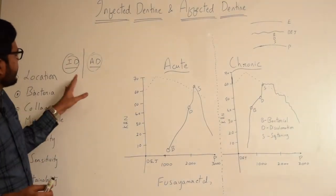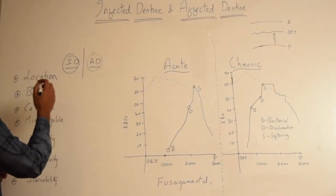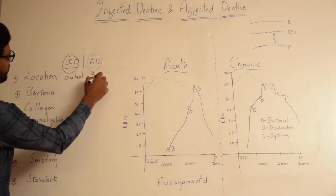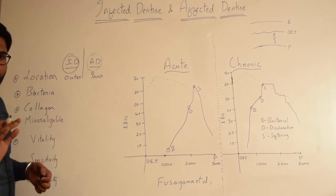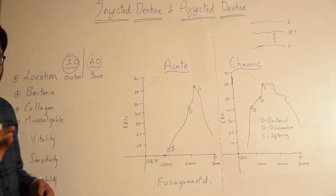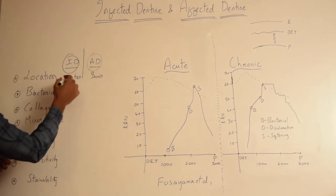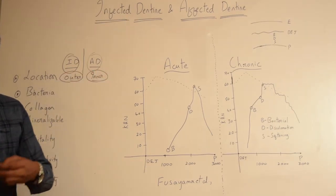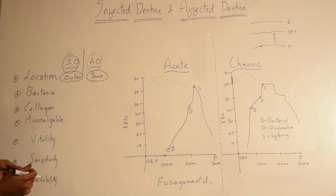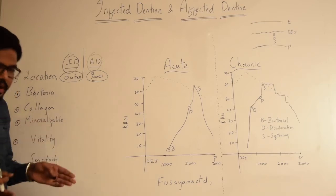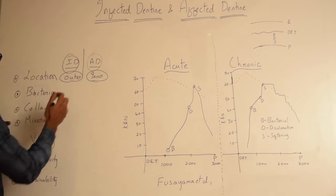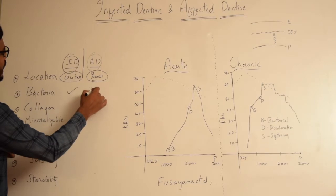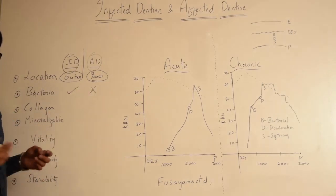First, coming to infected dentin: infected dentin is usually present on the outer side or outer surface, whereas affected dentin is present more towards the pulpal side or inner surface. So infected dentin forms the outermost layer whereas affected dentin forms the innermost layer. And coming to the presence of bacteria, infected dentin has numerous bacteria whereas affected dentin has no bacteria.